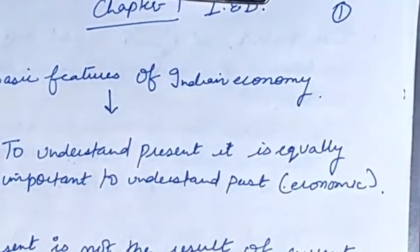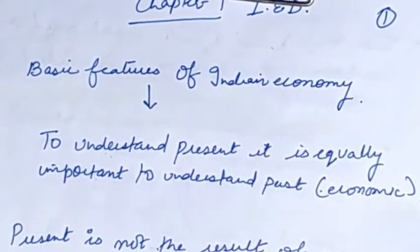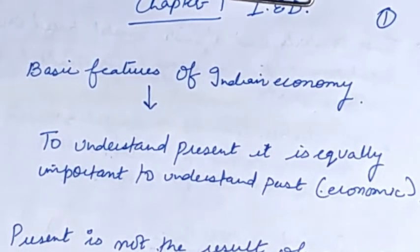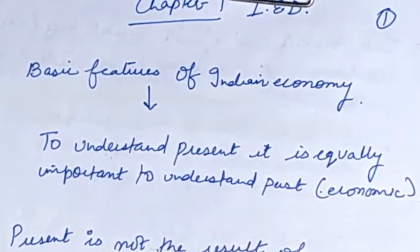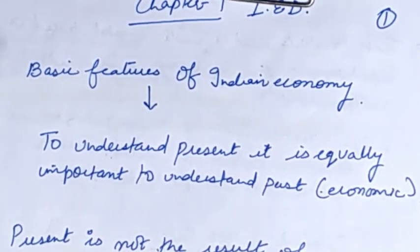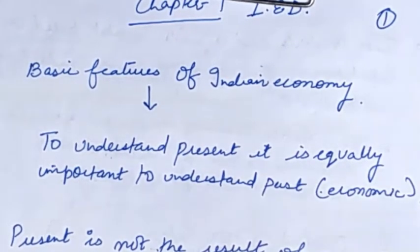British ruled India for 200 years, and finally India got independence on 15 August 1947. When Britishers ruled India, their sole purpose was to reduce India to a mere supplier of raw material. Industrial development was starting in Britain, and they wanted to use India as a feeder economy — using India's resources for their industrial development.